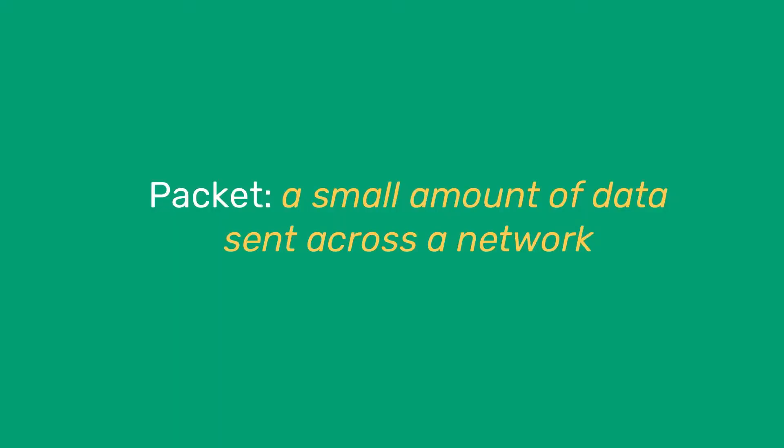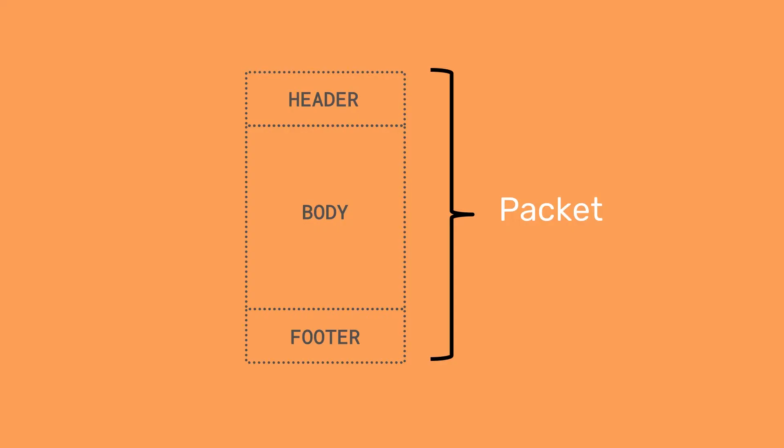When you send data over a network, it isn't sent all in one go. It's broken down into smaller chunks called data packets. A packet is, conceptually at least, split into a further three sections, which are called header, body or payload, and footer or trailer. There are a few alternative names for these sections, so feel free to use whatever terms you've learnt and are most comfortable with.